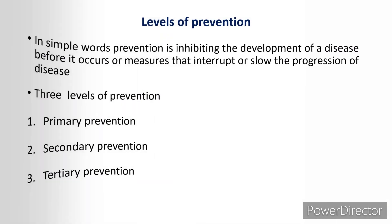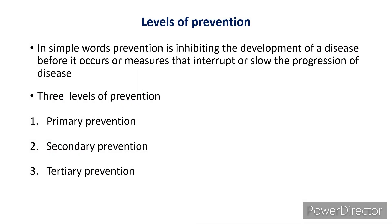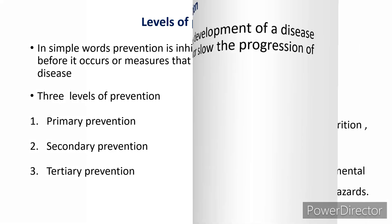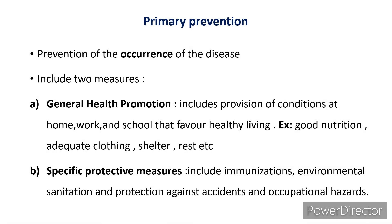Now coming to the concept of prevention — a very important concept. There are three types, or three levels, of prevention. In simple words, prevention is inhibiting the development of a disease before it occurs, or measures that interrupt or slow the progression of a disease. The first level is primary prevention, which focuses on prevention of the occurrence of the disease — we try to prevent the disease from occurring at all. It includes two measures.